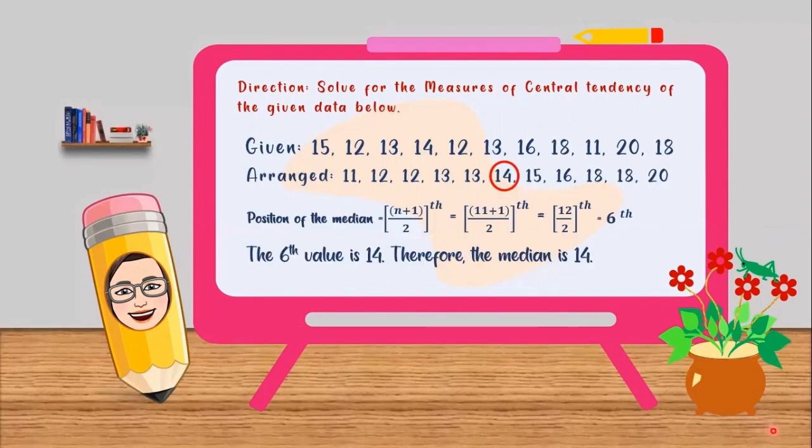What about the median? Remember that in solving the median, we need to arrange the given set of data in ascending order. To solve for the median value, we use the formula position of the median is equal to n plus 1 over 2.